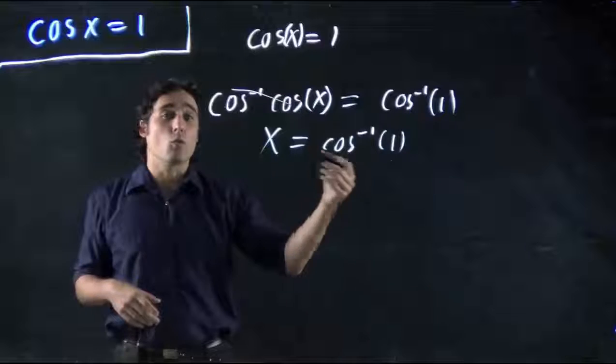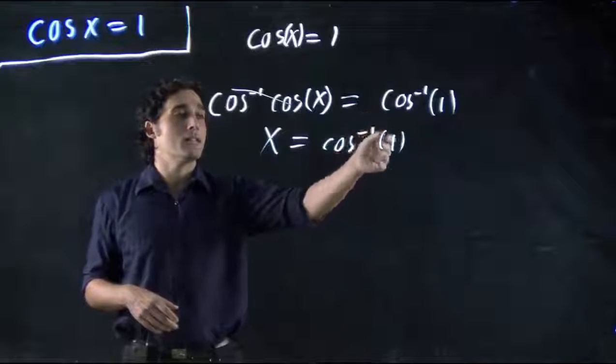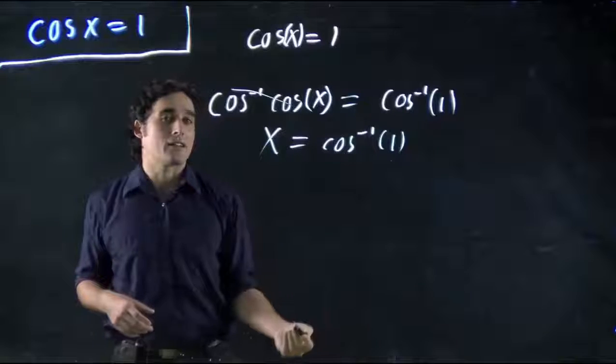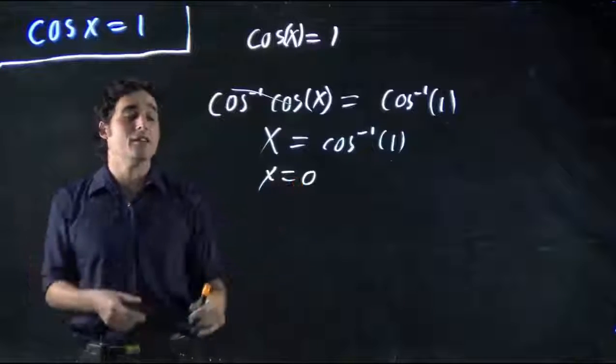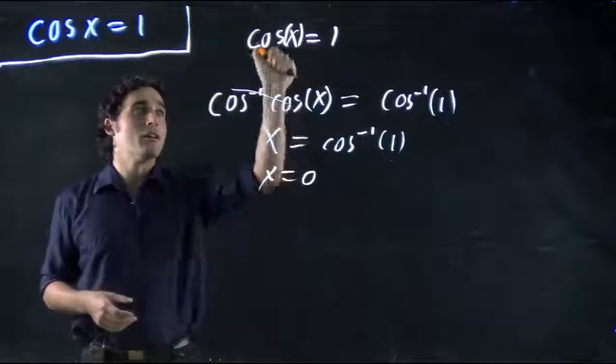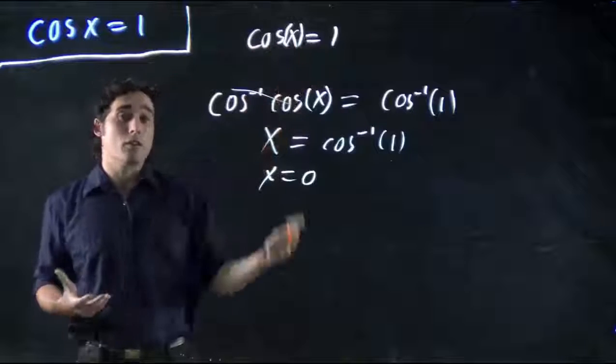Take cos to the minus 1 of 1 in your calculator. It evaluates when will cos be equal to 1. What value of x? Well, we'd get 0, actually. Nice, beautiful number. 0. When x is equal to 0, cos will equal 1. In fact, you could plug that back in and check cos of 0 and you'd get 1.